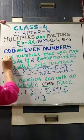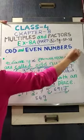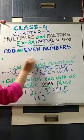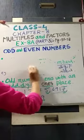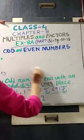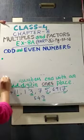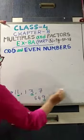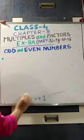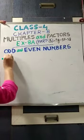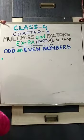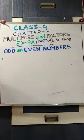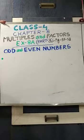Even numbers are completely divisible by 2, and odd numbers are not divisible by 2. 0, 2, 4, 6, 8 — these 5 are one-digit even numbers. And 1, 3, 5, 7, 9 — these are one-digit odd numbers.